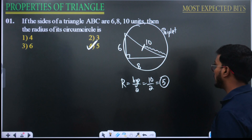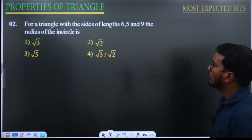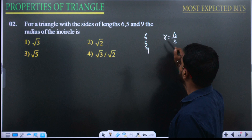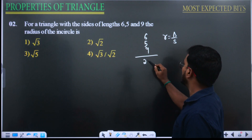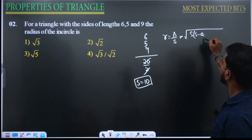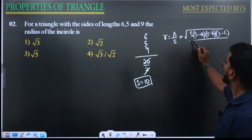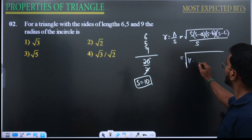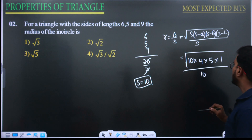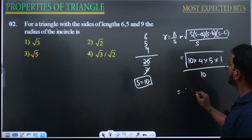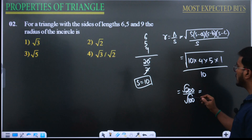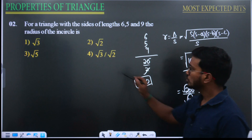Next question: sides 6, 5, and 9. Find in-radius r equals delta by s. First, s equals (9 plus 6 plus 5) divided by 2 equals 20/2 equals 10. Delta equals root of 10 times (10 minus 6) times (10 minus 5) times (10 minus 9) equals root of 10 times 4 times 5 times 1 equals root of 200. So r equals root 200 divided by 10 equals root 2. Answer is root 2.